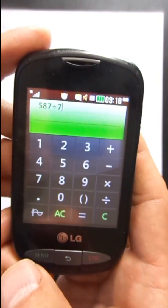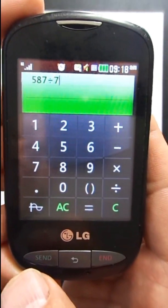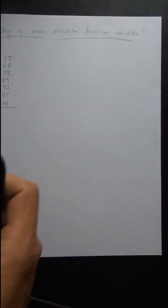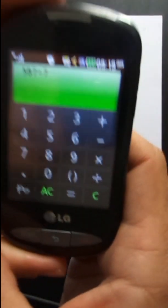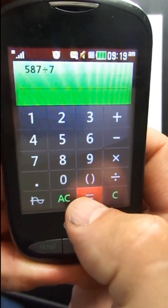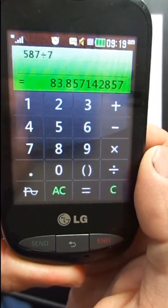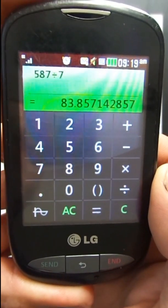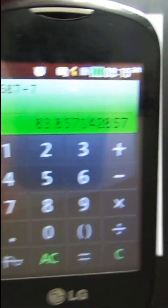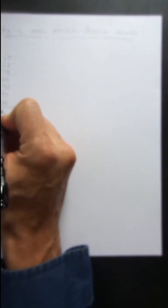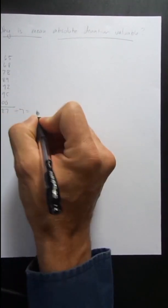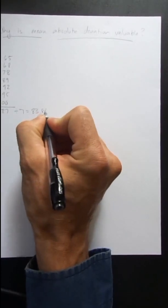We have our division problem here. If I hit equals, I get an average of eighty-three point eight six on the test. Five hundred and eighty-seven divided by seven equals eighty-three point eight six.